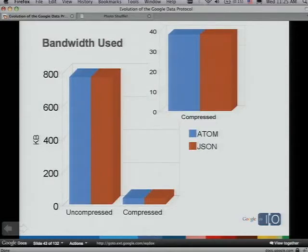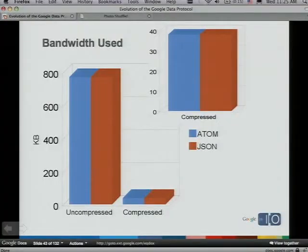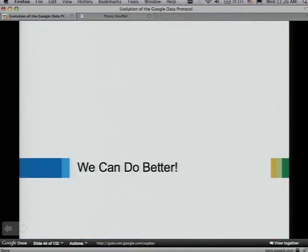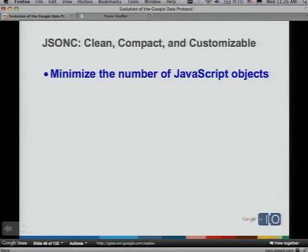If you're not using gzip compression on your requests to the server, you should be — it's a factor of about 20 improvement. Make sure you're getting gzip on requests and responses. But even when compressed, JSON and Atom compress about the same, so there's really no difference there. We can do better. I want to introduce something called JSON-C — a clean, compact, and customizable JSON format.